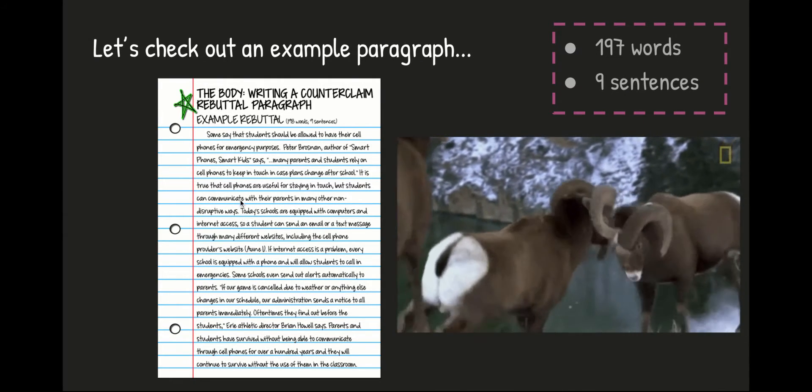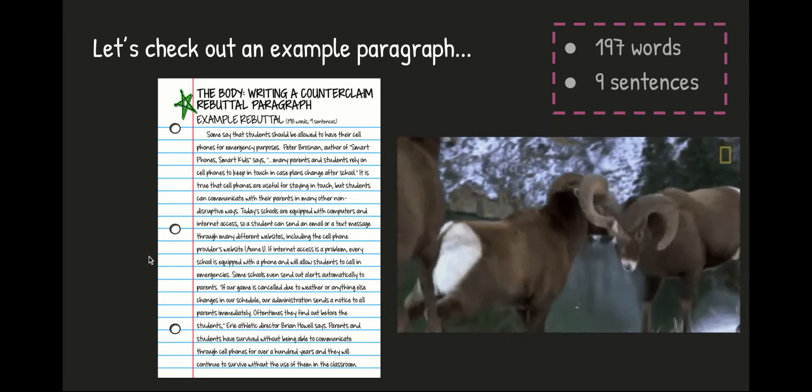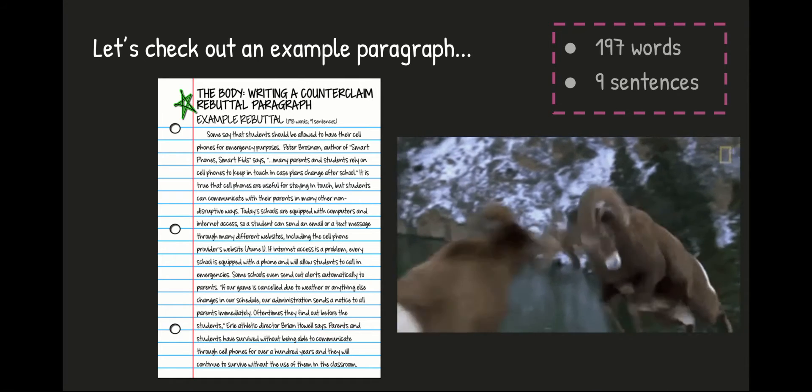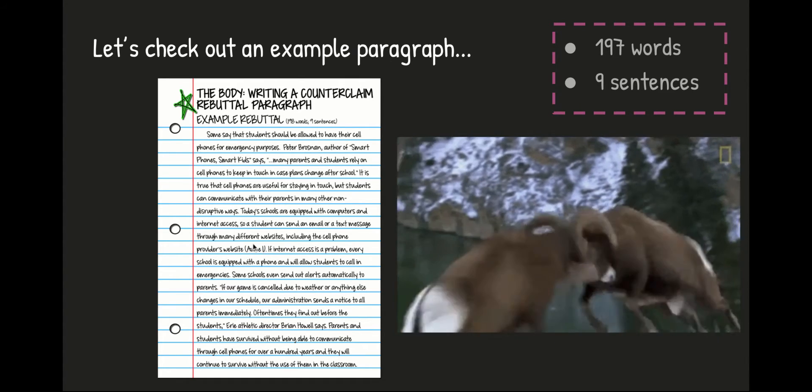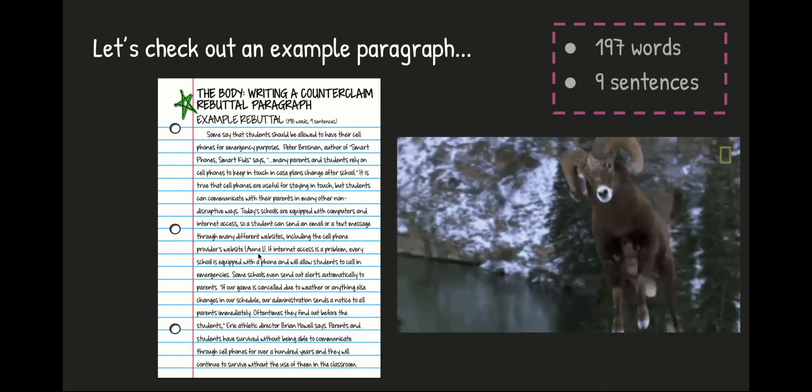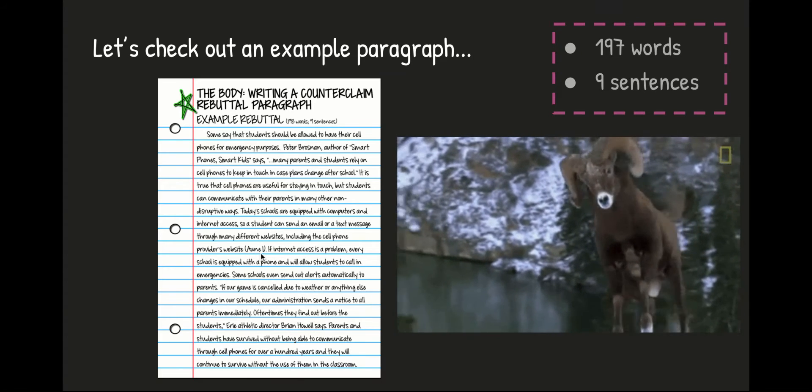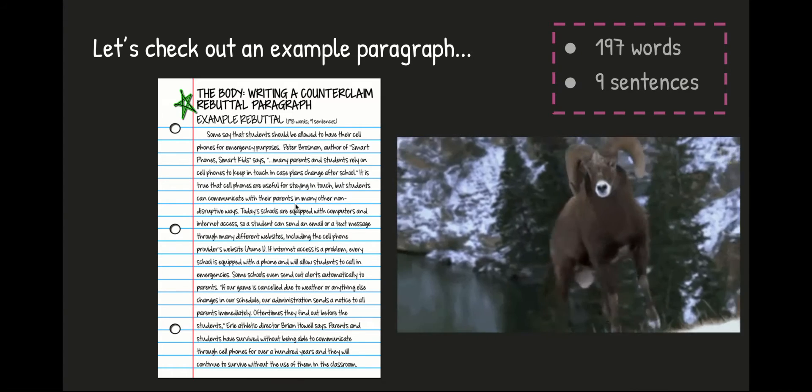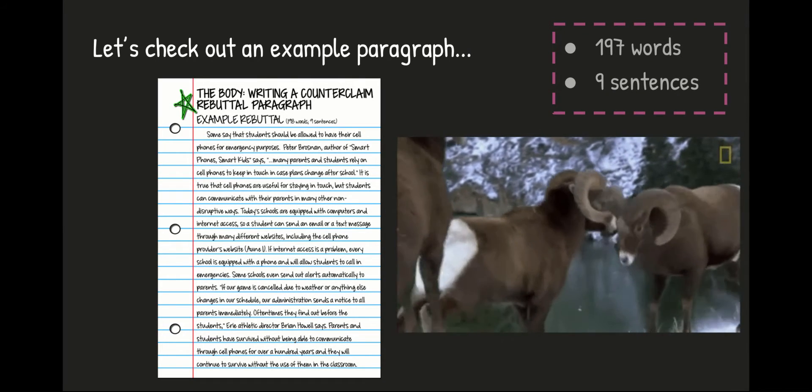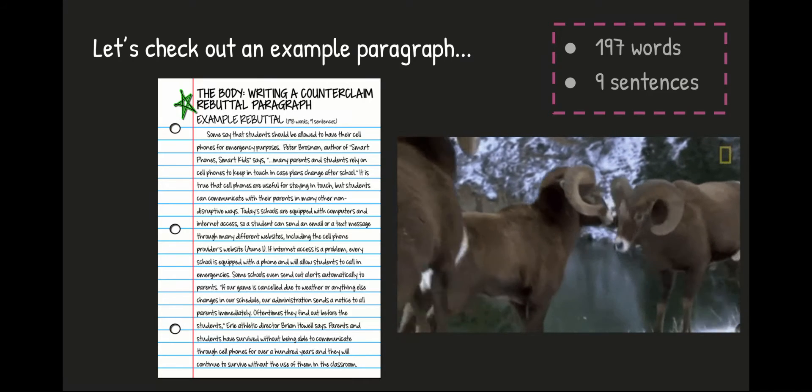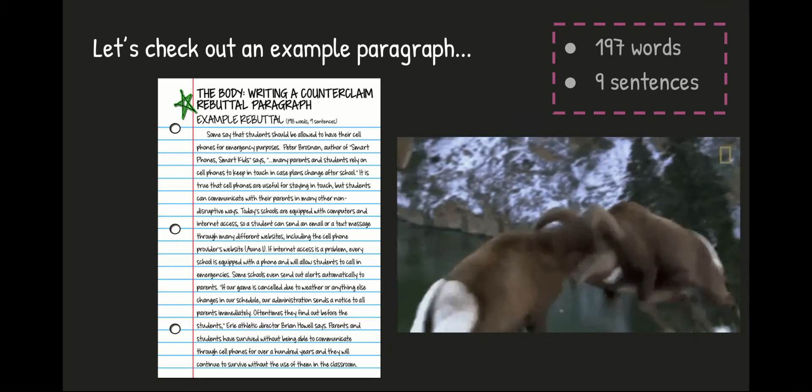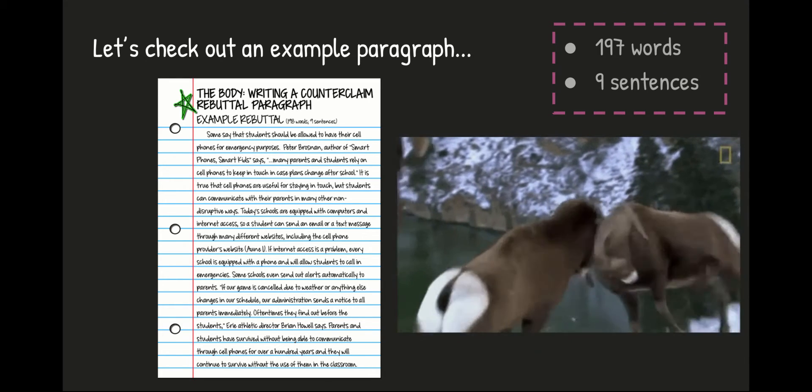Okay. So starting right here. Today's schools are equipped with computers and internet access so a student can send an email or a text message through many different websites, including the cell phone provider's website. This is a parenthetical citation. So that tells me if I go to my work cited page and I look at the author's name, A-U-N-E, on one, I can find this quote. I have paraphrased this quote. It's not a direct citation because I don't have quotation marks around it. So, again, your essay is going. Counterclaim. Rebuttal. Evidence to support your rebuttal. That's what that looks like.